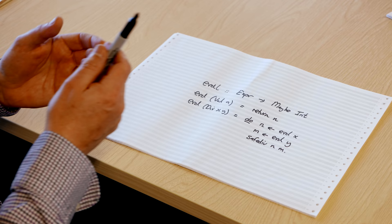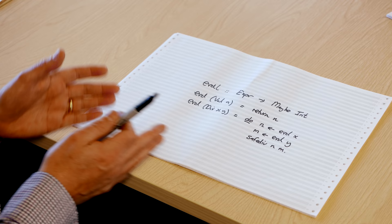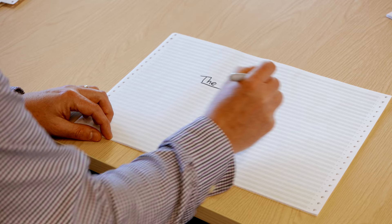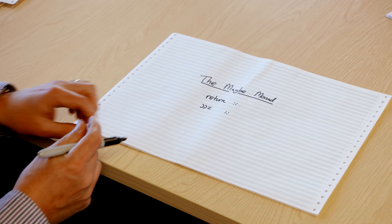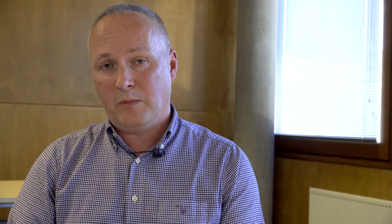You might ask: what does all of this have to do with monads? What we've actually done is rediscovered what's known as the Maybe monad. The Maybe monad is three things: the Maybe type constructor (which takes a parameter — you can have Maybe Int, Maybe Bool, etc.), plus two functions: return and the sequencing operator. Return takes a value of any type A and converts it into a Maybe value. In our case it just took an integer like five and returned Just(5). Essentially it's just applying Just — a bridge from the pure world of values to the impure world of things that could go wrong.